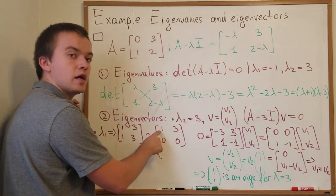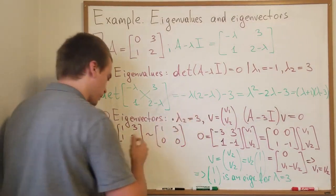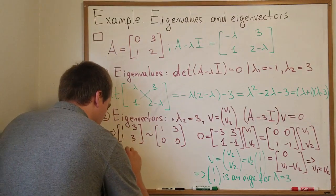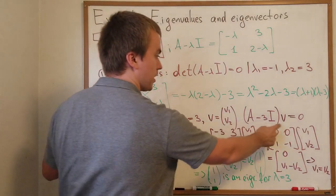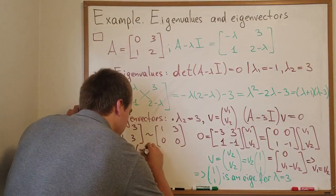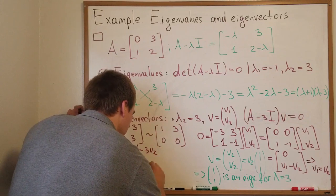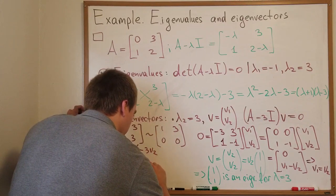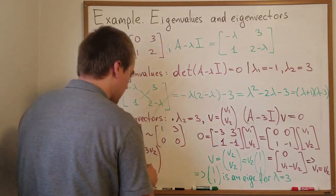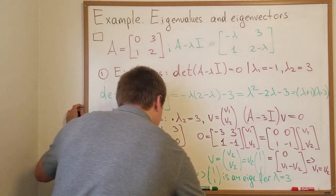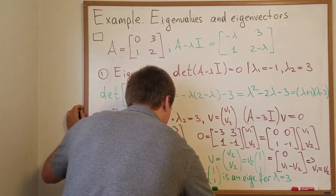And here I can see that v1 equals negative 3 v2. So from here follows that my vector v if it lies in my nullity is going to be in form negative 3 v2 times v2. And when I'm going to factor v2 I'm going to get the element negative 3 and 1.